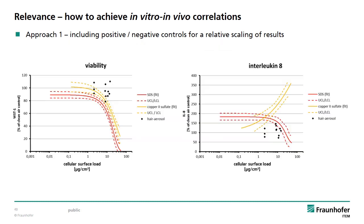For a discussion of the in vivo relevance of these results they can be correlated to the cellular surface load of the cells during exposure. On the one hand this enables an extrapolation of the equivalent human lung exposure per inner lung surface. On the other hand results from the test substances can now be classified. In the case of the results from the testing of aerosols during use of the hair straightening product, we see that the surface loads during these exposures were in a toxic and interleukin-8 inducing range when using both positive substances. Hence we can deduce that the toxic potential of the test aerosol would have been observable in the test system if present.